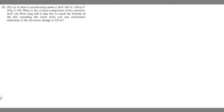In this problem, we're told a skier is accelerating down a 30-degree hill at 1.8 meters per second squared. What is the vertical component of her acceleration, and how long will it take her to reach the bottom of the hill, assuming she starts from rest and accelerates uniformly if the elevation change is 325 meters?